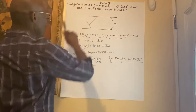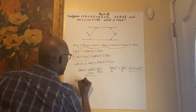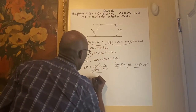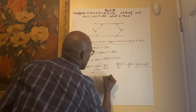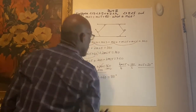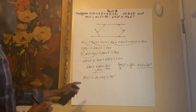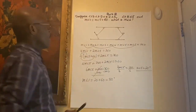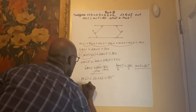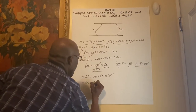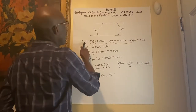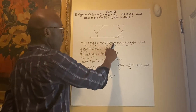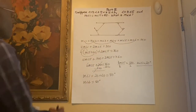Now go back to the equation to get measure angle 1. Measure angle 1 equals measure angle 5, which is 20, plus 60. That equals 80. So measure angle 1 equals 80. But the question asks: what is measure angle 6? Since measure angle 6 equals measure angle 1, measure angle 6 equals 80. Thank you for watching.